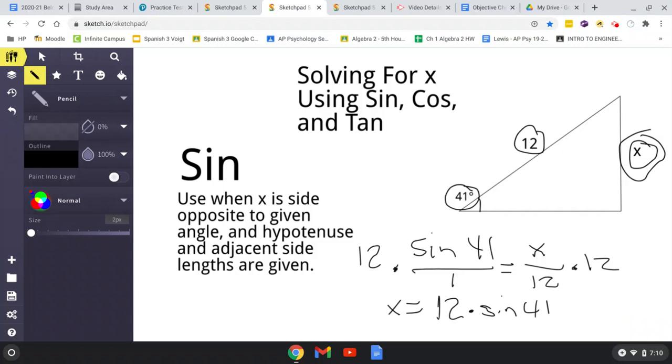I got 7.873. So, x equals 7.873. And that is our answer for this sine problem.